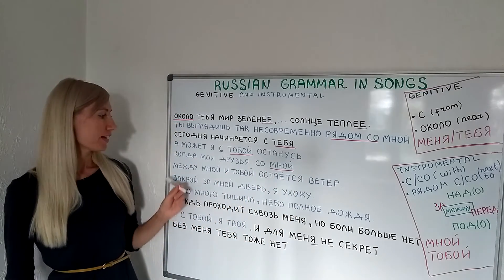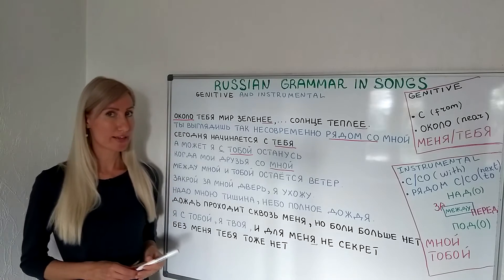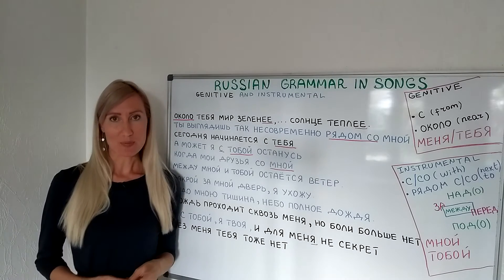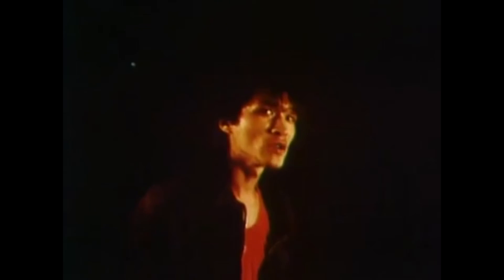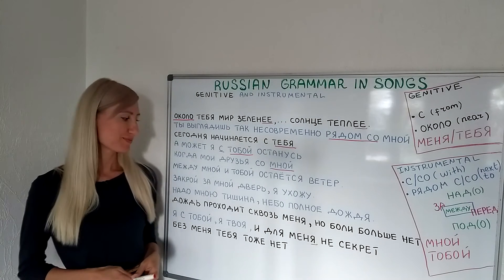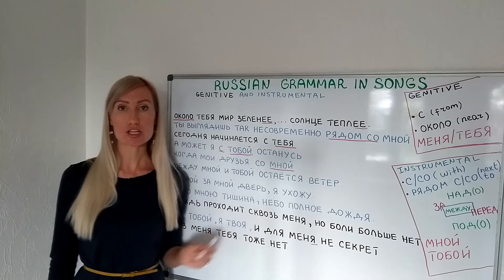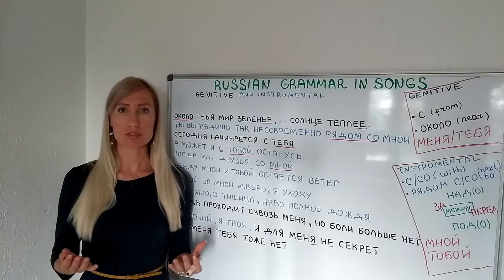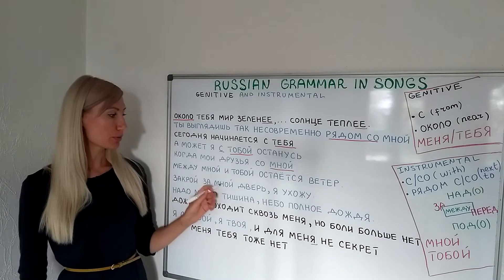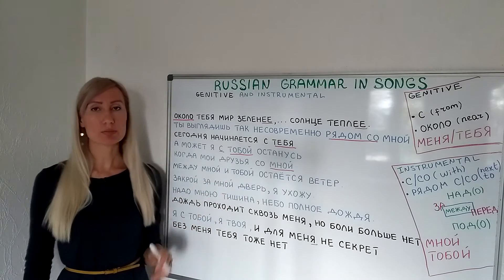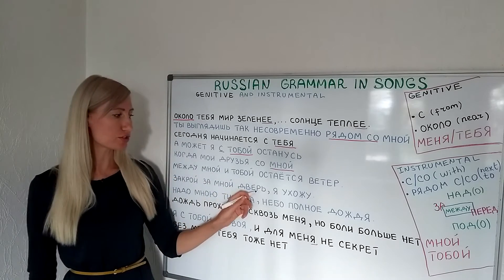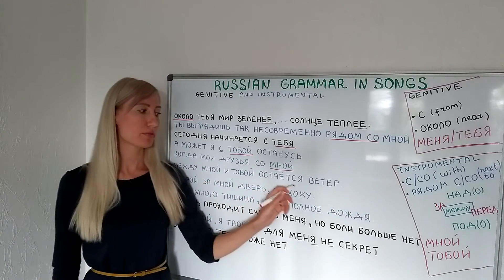Now let's listen to Viktor Tsoi again with prepositions. The line is: 'Закрой за мной дверь, я ухожу.' 'Закрой' is imperative — close, do it. 'За мной' literally means 'behind me'. So: close the door behind me, I'm leaving.